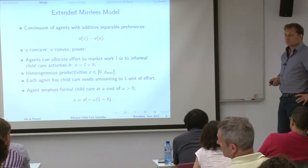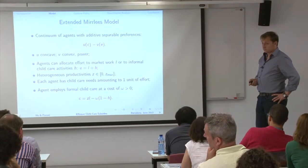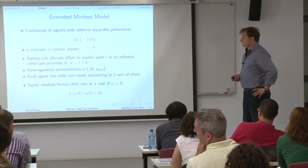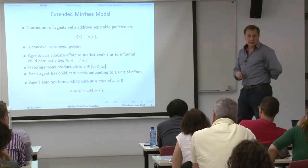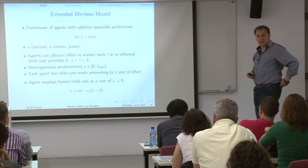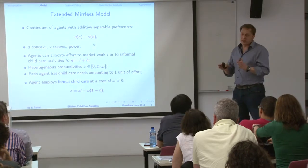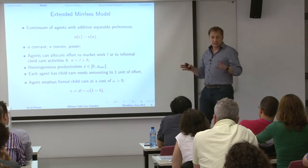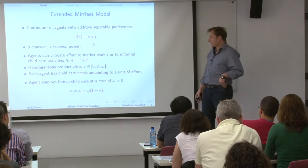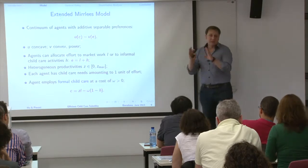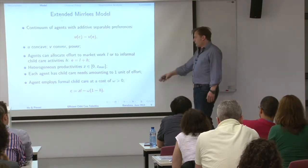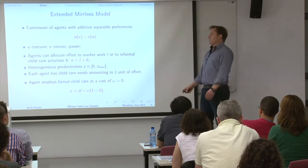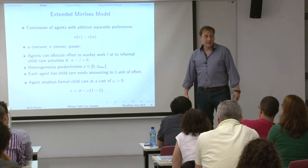If there is any correlation between preferences, utility of labor, and utility of having a child, that would be a concern. The calibration focuses on women with children, single mothers, abstracting from a lot of heterogeneity. Let me go to present the principle quickly; the quantitative part is more interesting for this audience and I'm happy to receive suggestions to improve it.